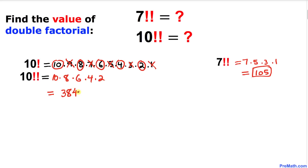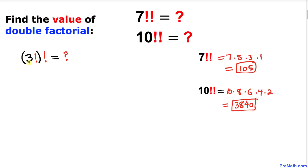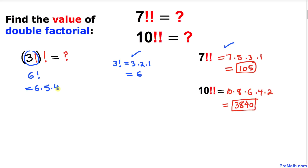If we multiply those numbers, our answer is going to be 3840. That is the answer for 10 double factorial. Here's one more example: we have 3 factorial inside parentheses, and then another factorial outside. The 3 factorial inside equals 6, so we compute 6 factorial, which is 6 times 5 times 4 times 3 times 2 times 1, and if we multiply them we get 720.